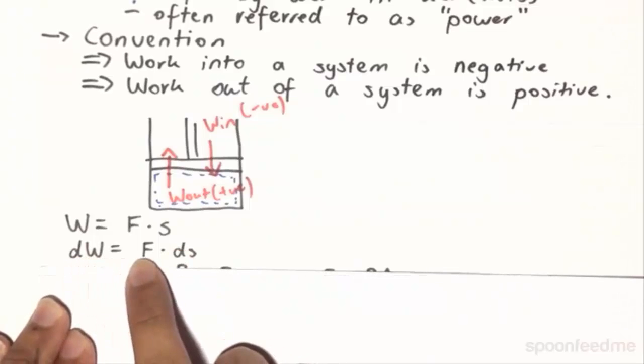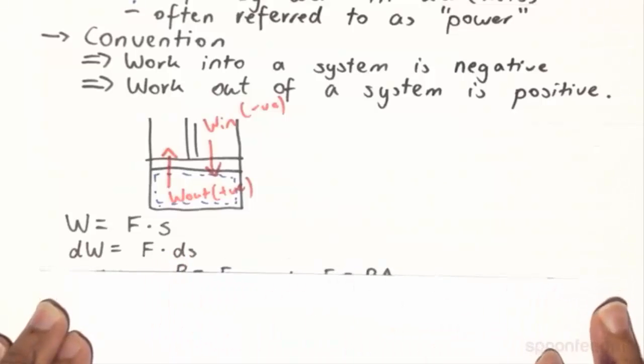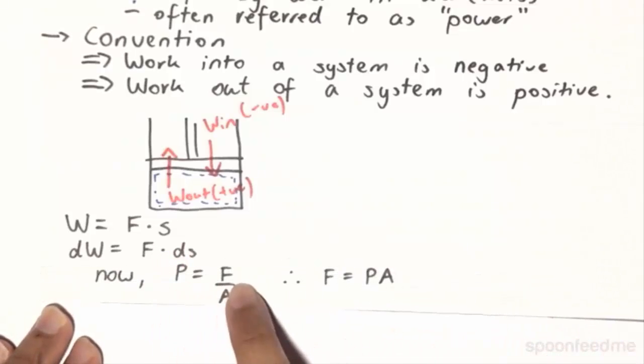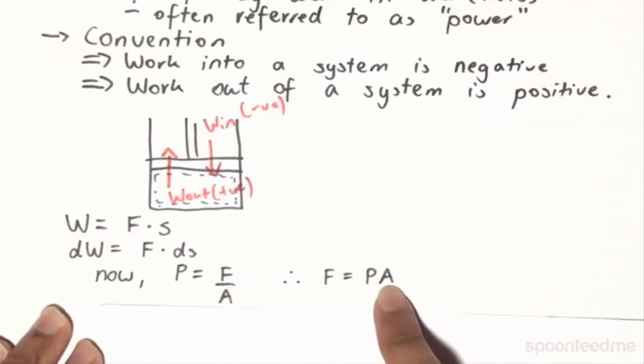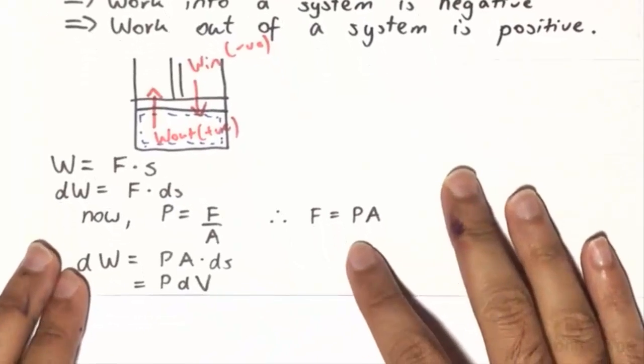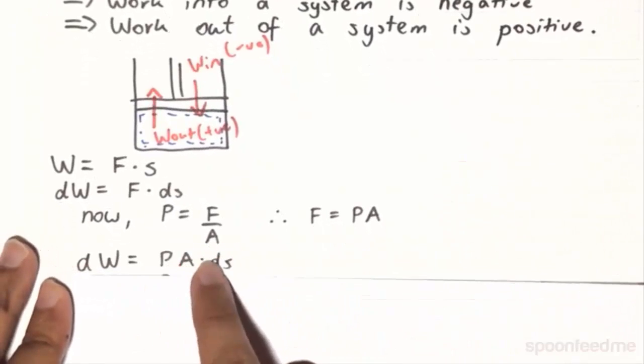Now, recall that pressure is equal to the force over area. So force is going to equal the pressure times the area. So therefore, we can replace our dW by P A ds.